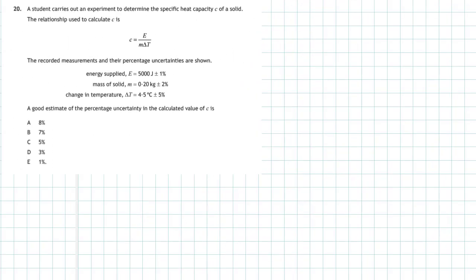Question 20 of section 1 of the Higher Physics exam of 2018, and it's a practical one. A student carries out an experiment to determine the specific heat capacity C of a solid. The relationship used to calculate C is C equals E, the energy, divided by M, the mass, times the change in temperature.